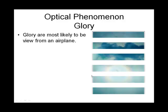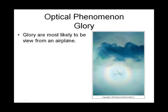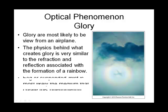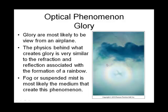Then we move on to something called a glory. A good place to view a glory is from an airplane, and a similar phenomenon to what creates a rainbow is happening within liquid water droplets. It's like a circular rainbow happening down in the clouds. The sun must be at the back, and you can see the shadow of the plane. The physics involved both refraction, reflection, and then refraction again.